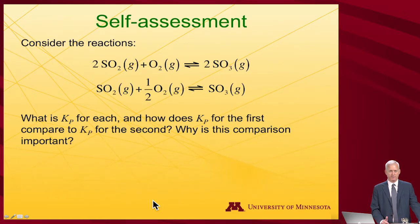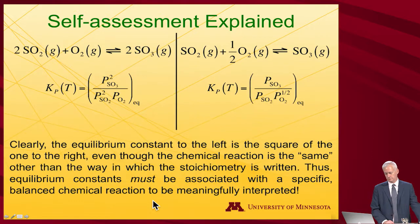So the standard state free energy of reaction is minus RT log the equilibrium constant Kp. Let's actually put that into practice. Here are two reactions but they're the same reaction, both sulfur dioxide reacting with oxygen to make sulfur trioxide. The question is what's Kp for each and how do they compare one to the other, and why is that important?